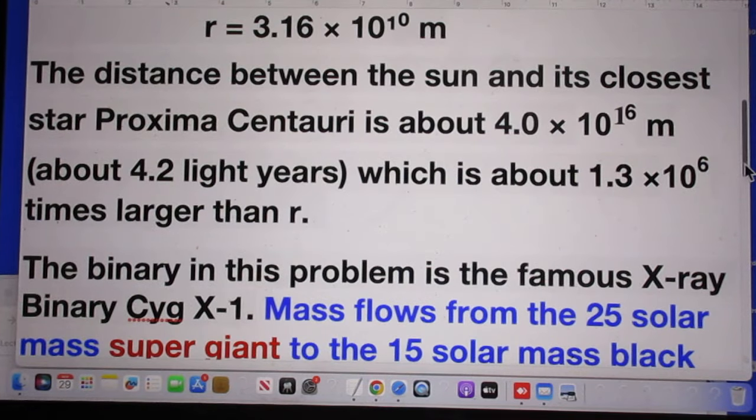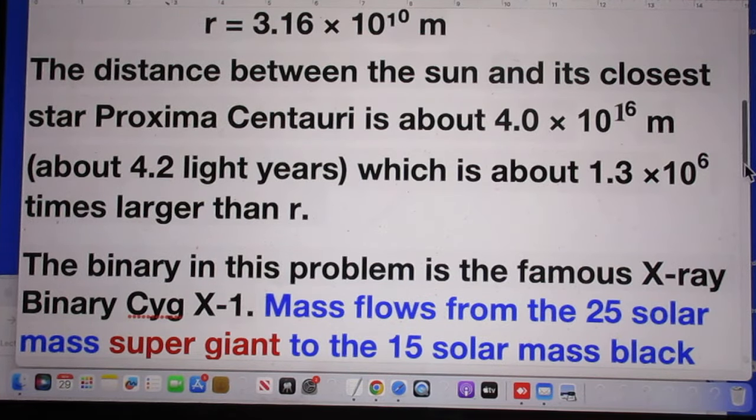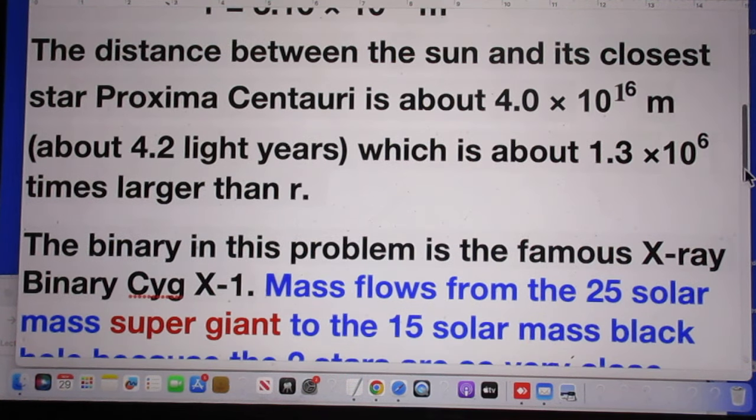The distance between the sun and its closest star Proxima Centauri is about 4.0 times 10 to the 16 meters. About 4.2 light years, which is about 1.3 times 10 to the 6 times larger than R.